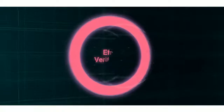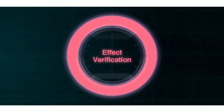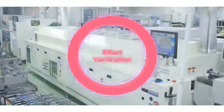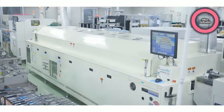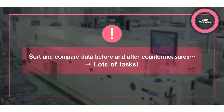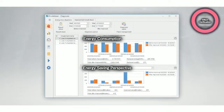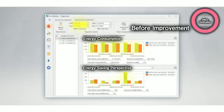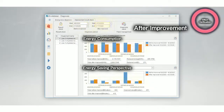The last process is effect verification of energy-saving measures. Verifying the effects of pre- and post-measures by sorting through and comparing the data was time-consuming. The EcoAdvisor allows us to see the effect of improvements on energy-saving, operating rate, and others numerically by simply specifying pre- and post-measure periods.